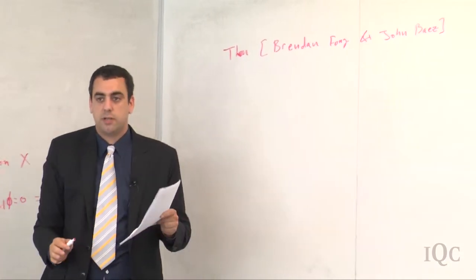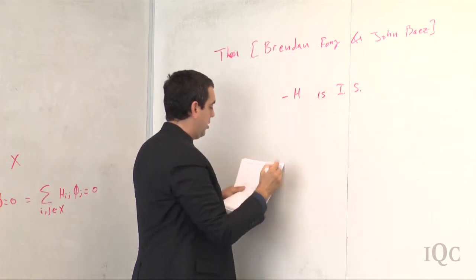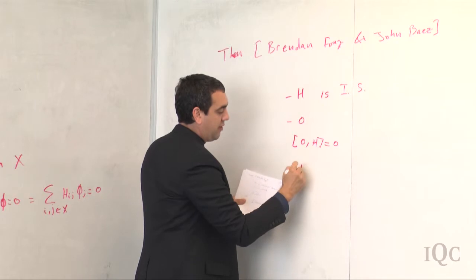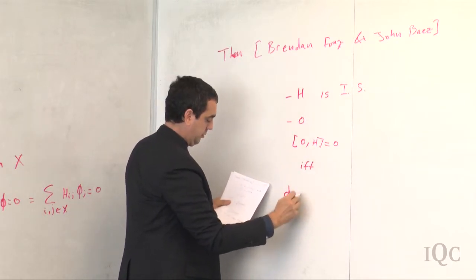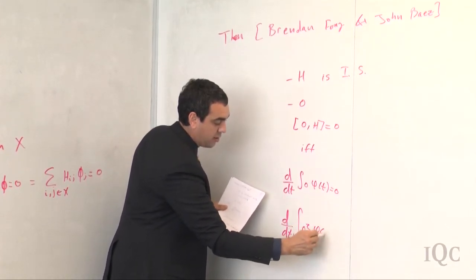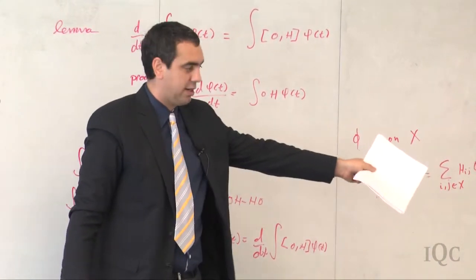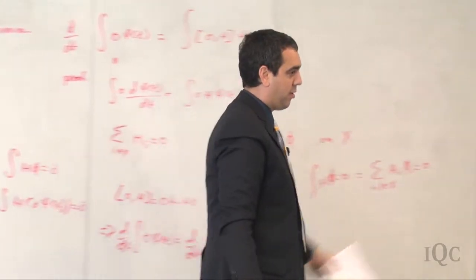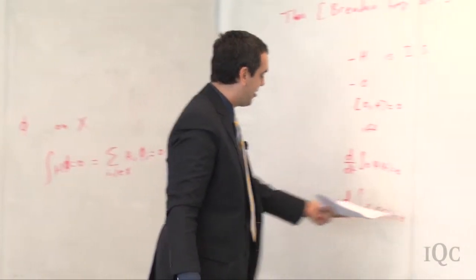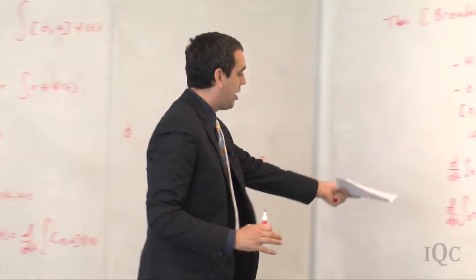This was originally proven by John and Brendan. The theorem: H is infinitesimal stochastic, O is an observable. Then [O, H] = 0 if and only if d/dt ⟨O, ψ(t)⟩ = 0 AND d/dt ⟨O², ψ(t)⟩ = 0 for all solutions ψ(t) of the master equation. The surprising thing is that you need both conditions — it's different from quantum physics. It's not just that the observable commutes with the Hamiltonian; you also need the square of the observable to commute. I don't think anybody would have expected this.